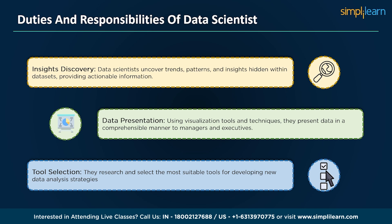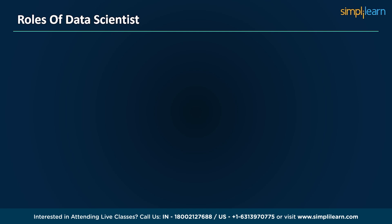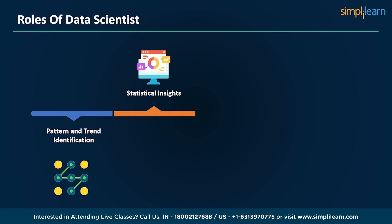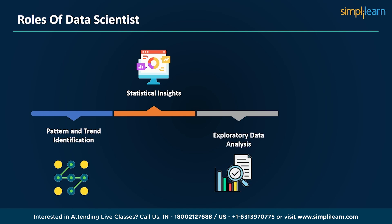Data scientists are an integral part of many companies. Several key functions include pattern and trend identification: data scientists are adept at identifying patterns and trends within business data, sifting through vast data sets to uncover valuable insights. Statistical insights: they provide statistical insights that guide decision making, and their ability to analyze data statistically is pivotal in making informed choices. Exploratory data analysis: data scientists conduct exploratory data analysis to gain a deeper understanding of the information, helping identify outliers, correlations, and potential areas of interest.